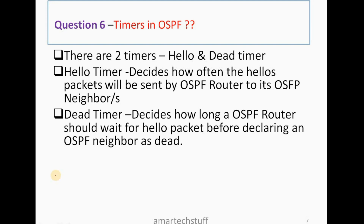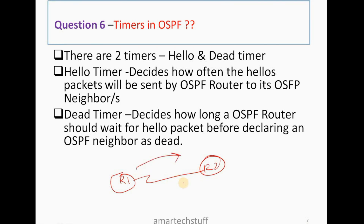Question number 6: What are the timers in OSPF? In OSPF, between OSPF neighbors, some messages are exchanged — hello messages — which are keep-alive messages exchanged between routers. For example, R1 and R2 are two OSPF routers and they are neighbors of each other, so they will exchange hello messages. Hello timers decide how often these hello packets will be exchanged between the two routers.